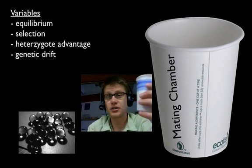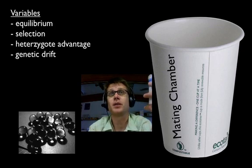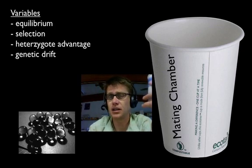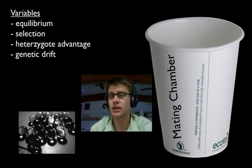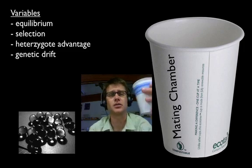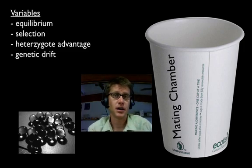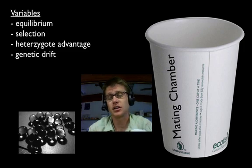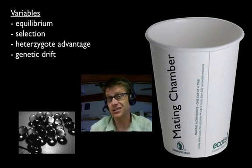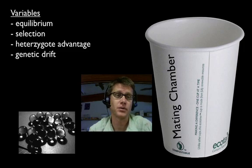The next thing we model is heterozygote advantage. An example of that might be sickle cell anemia. Sickle cell anemia is an awful disease if you're homozygous recessive for it. But if you're heterozygous you're actually protected against malaria. And so heterozygotes actually are protected. And so that's an advantage. And so we model that and see what happens to our frequencies.